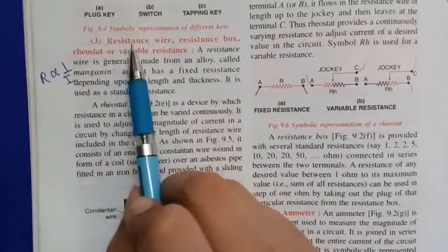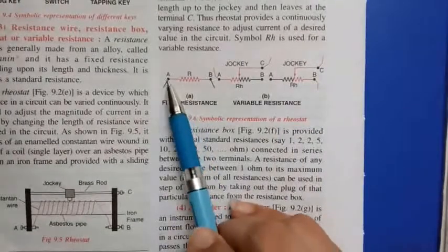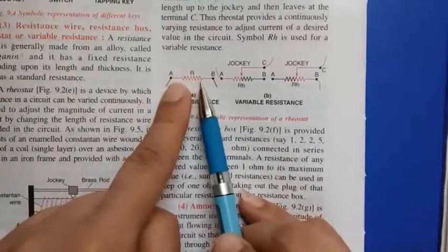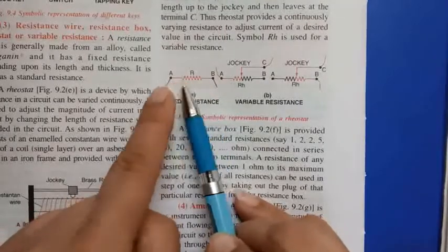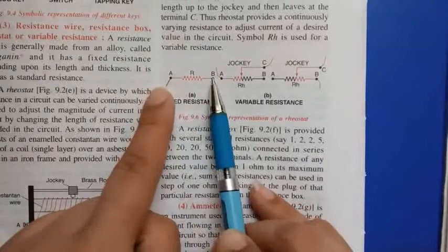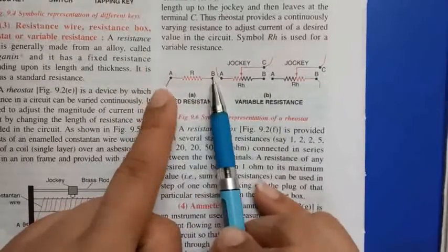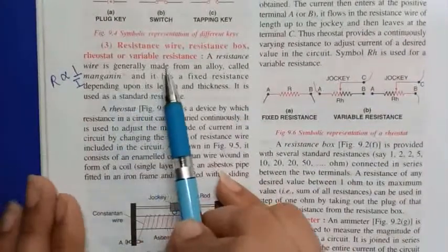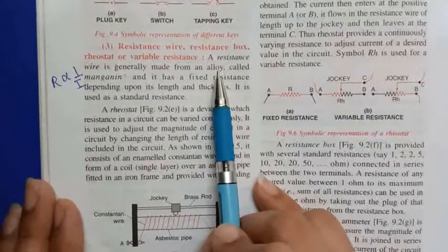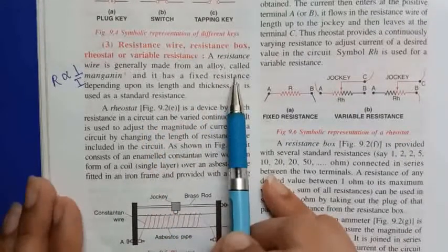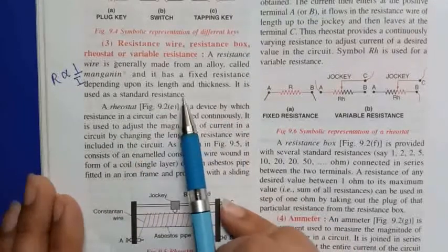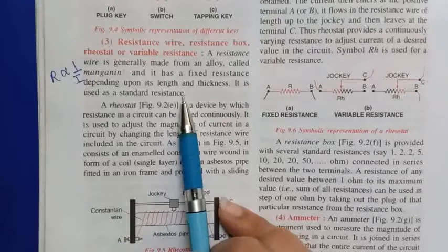What is the symbol used for resistance wire? The symbol used for resistance wire shows fixed resistance. It has two terminals — A and B. Resistance wire is generally made up of alloy and has fixed resistance depending upon its length and thickness. It is used as a standard resistance. Its value is fixed and cannot be changed.